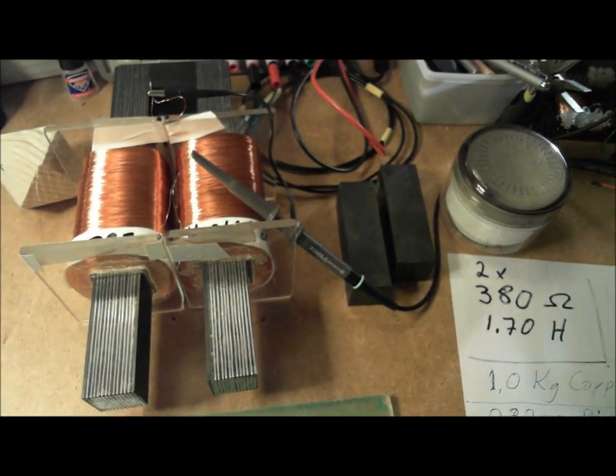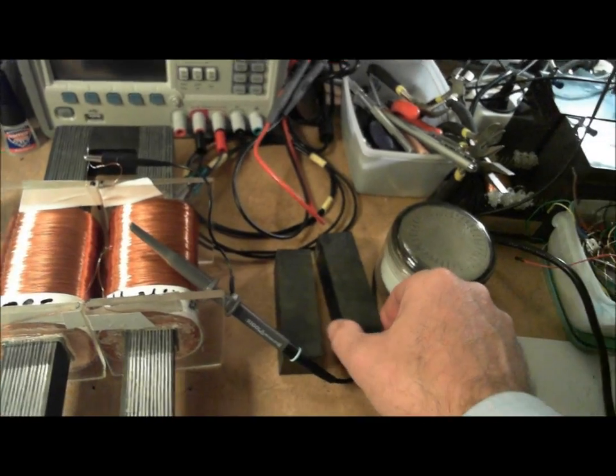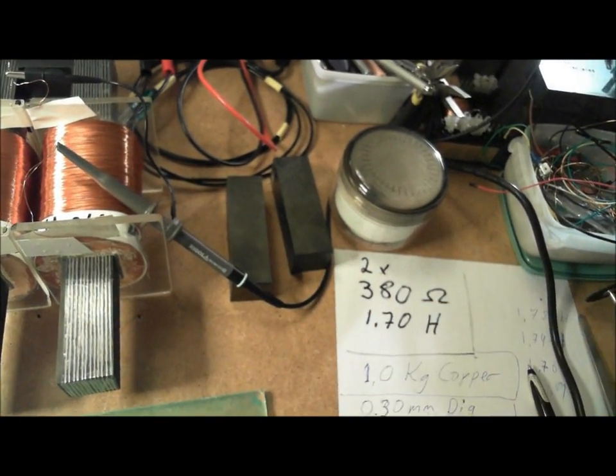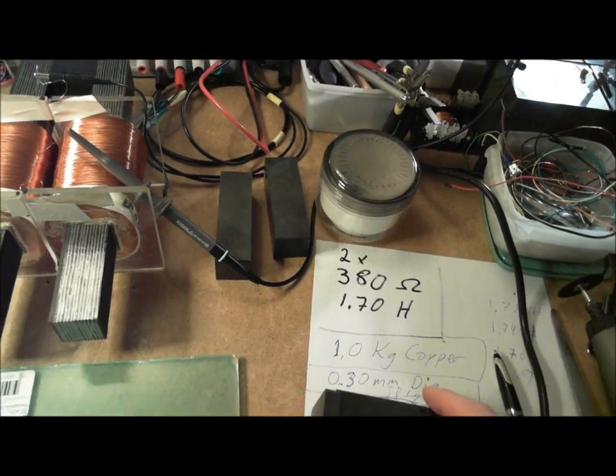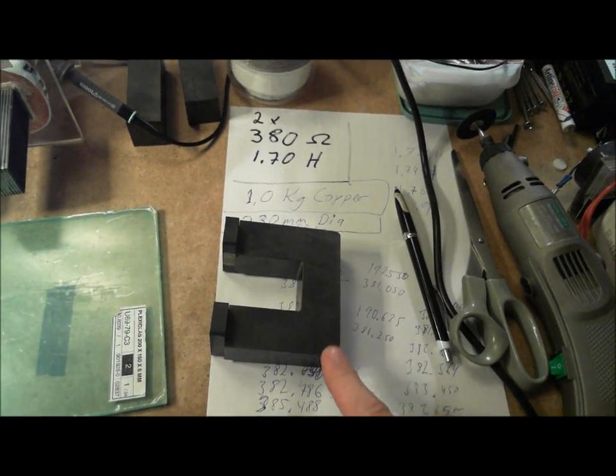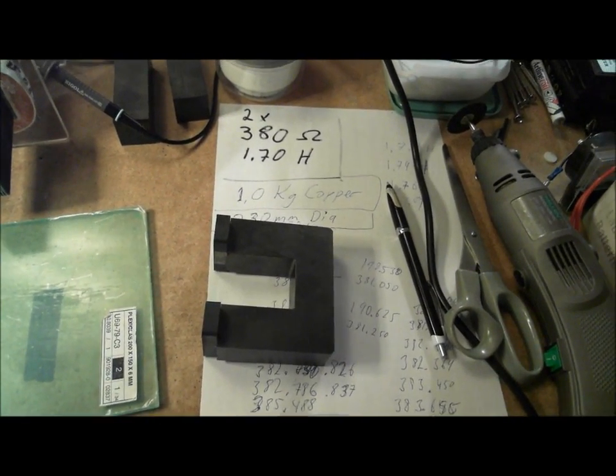This PMH uses four ferrite cores, eye bars, and one U-shaped core.